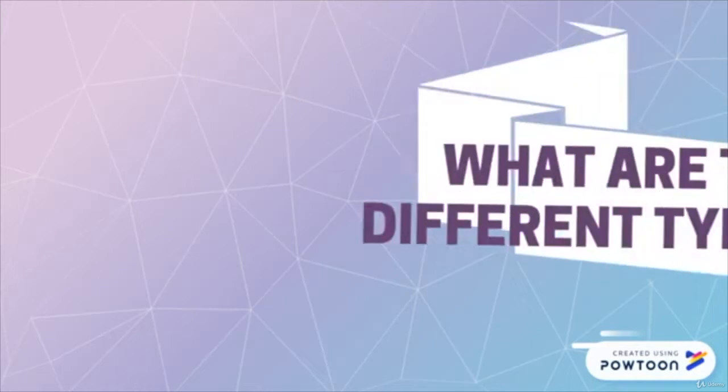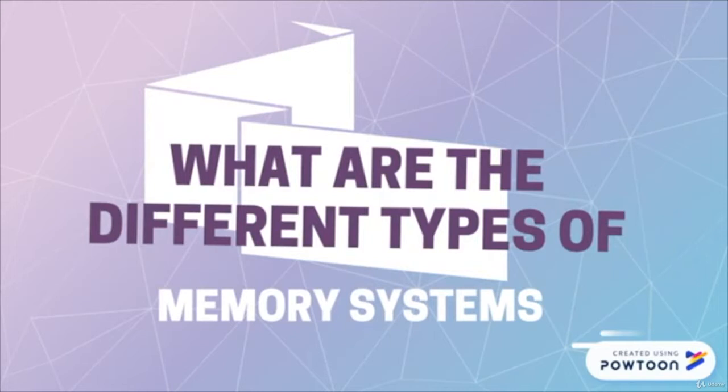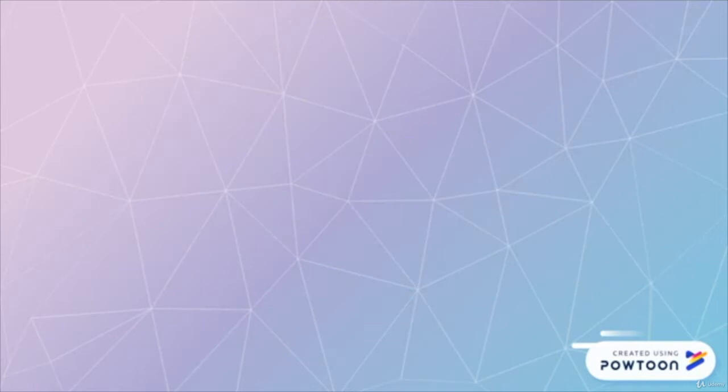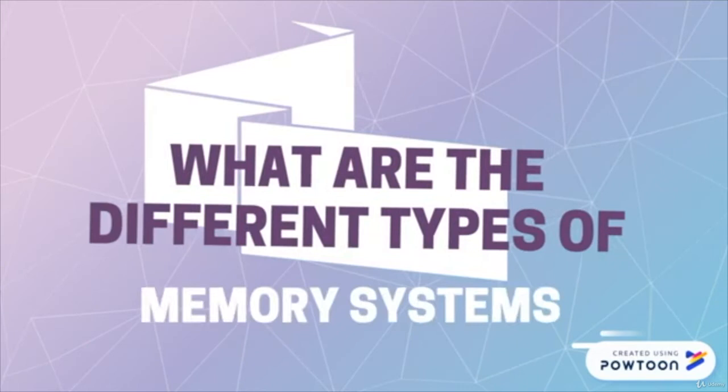In this lecture, we are going to be talking about the different types of memory systems that we have as human beings. In other lectures, we are going to be talking about the difference between long-term memory and short-term memory, and these different types of memories are divided between those two major types. Our sensory memory is the primary memory system that we have.